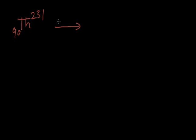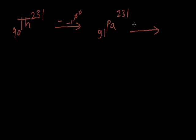After releasing one beta particle, represented by -1β0, the atomic number increases by 1 unit while the atomic mass remains the same. So atomic number becomes 91 and atomic mass remains 231. The element with atomic number 91 is Protactinium. After releasing one more beta particle, atomic number increases by 1 unit again, becoming 92, and atomic mass remains 231.